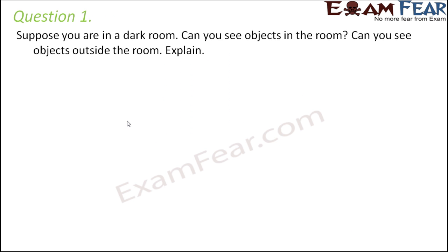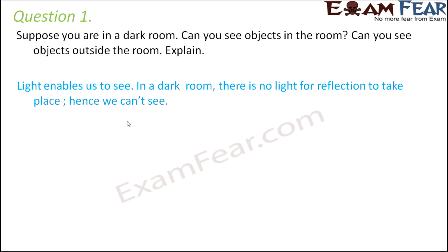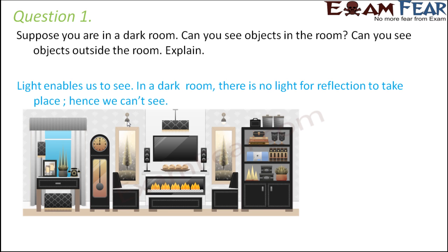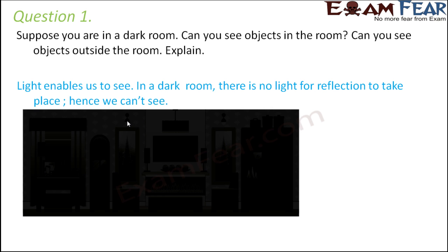Question number one: suppose you are in a dark room. Can you see objects in the room? Can you see objects outside the room? If you are in a dark room, you will not be able to see anything, because light enables us to see. Only if light is present does reflection of light happen, and if the reflected ray reaches our eyes, we are able to see that object.